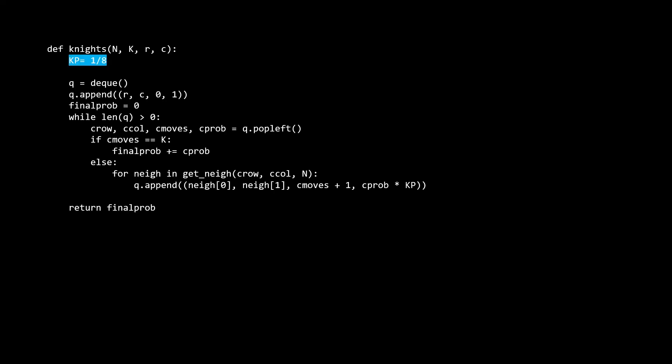We have KP, which stands for knight probability. I've just hard coded this to be one-eighth to represent the one-eighth chance that the knight goes to any of the possible positions. We then initialize our queue and put on the first element. The first element in the queue is the starting position of the knight. The first two numbers are the row and column. The third number is the move that the knight is currently on — it starts at zero because the knight hasn't moved yet. The last number is the probability for that path, which starts off as one or 100% probability because it's guaranteed for the knight to be in the starting position before a move has taken place.